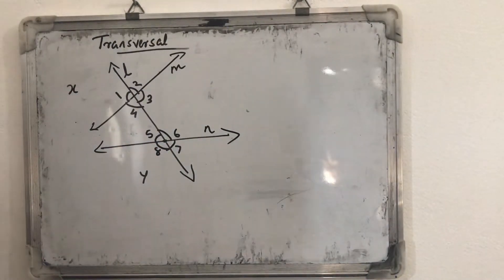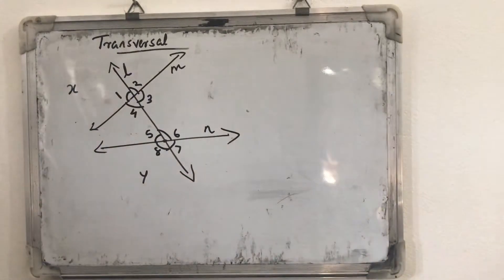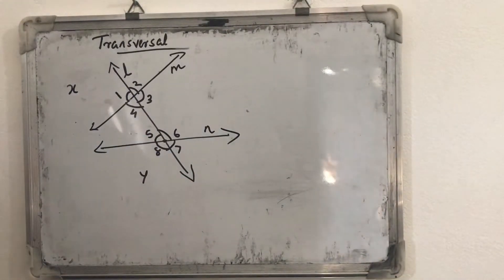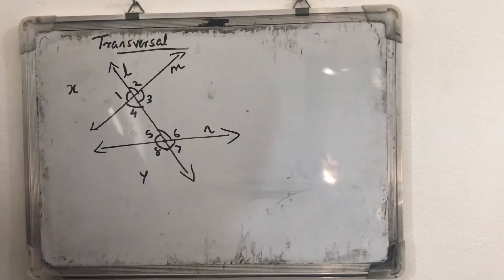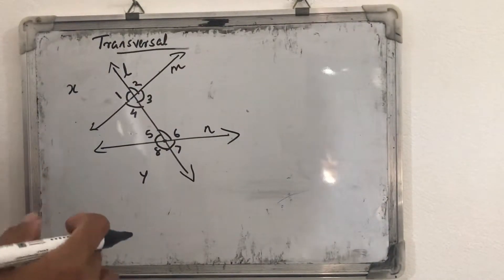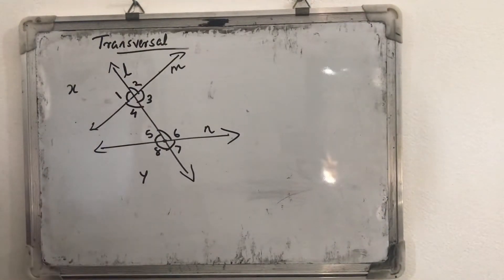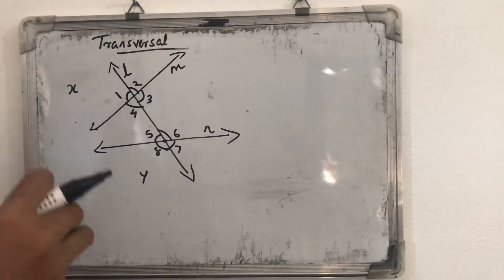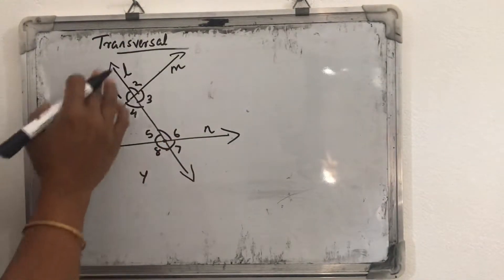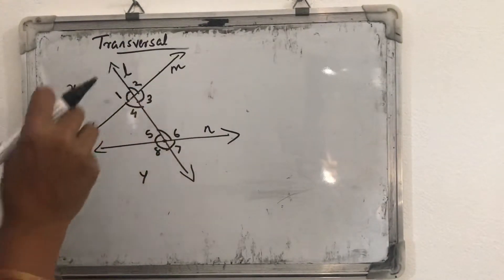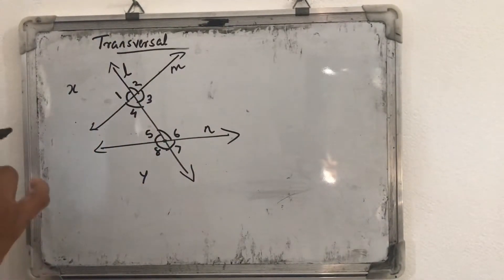So eight different angles are formed there. This is very very important — all of you take note carefully. If you don't understand, watch the video again and try to understand what are the names of each of those angles. Eight angles are formed here, and all eight angles have special names.